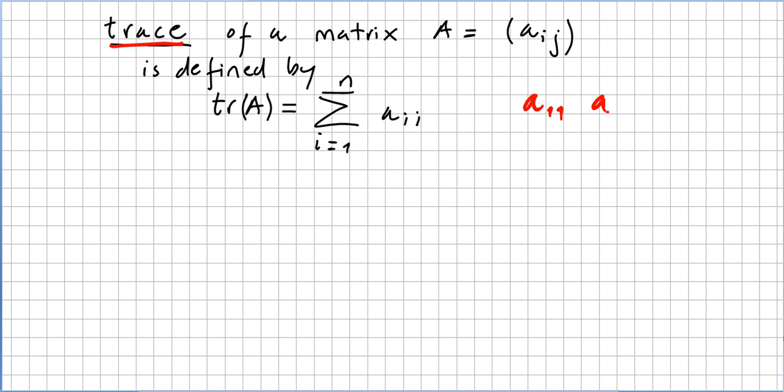So A_11, for instance, if you have a 2 by 2, so the trace of this matrix will be A_11 plus A_22, adding the diagonal.